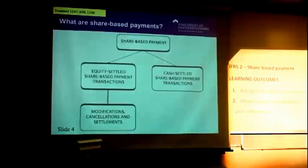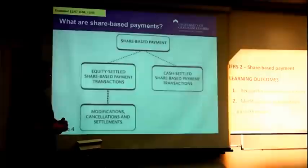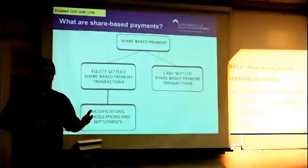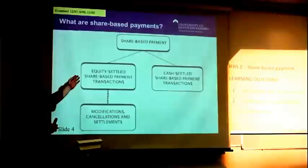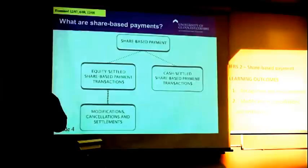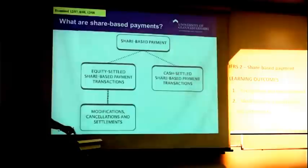This diagram is useful because it splits this subject into two key parts. The first is equity-settled share-based payments — in other words, the employee in the share option scheme is given shares. The other type is a cash-settled share-based payment, where cash is paid based on the market value of the shares at that time, so it's still linked to the shares but it is cash-settled rather than equity. We're going to mainly concentrate on the equity-settled because this is the more complicated and the most likely to be examined. You'll also recognise this area from our learning outcome 2, where we're talking about modifications, cancellations and settlements.